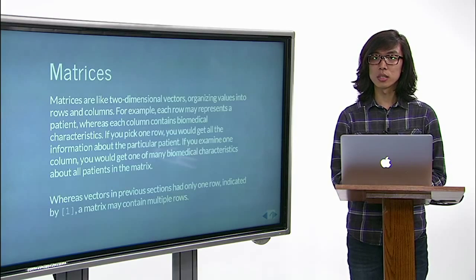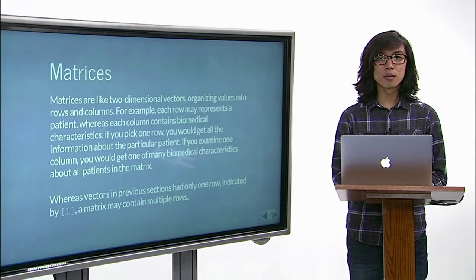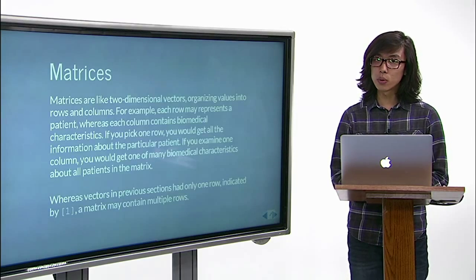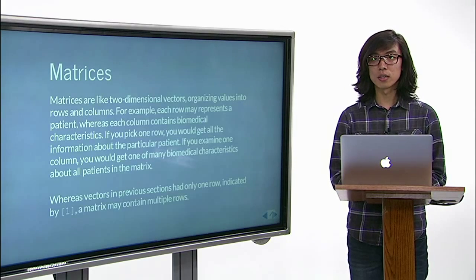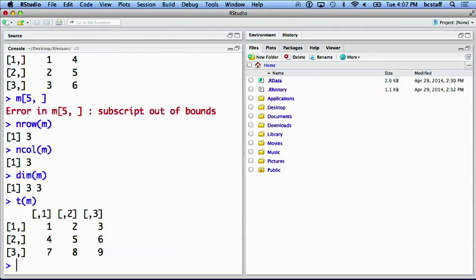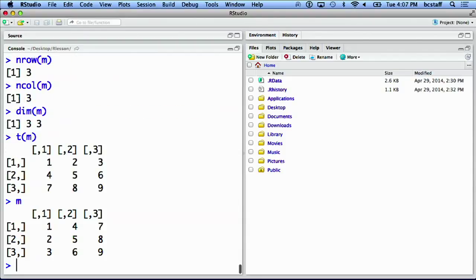Matrices being two-dimensional, we could flip the columns and the rows. Such operation is called transpose and used often in statistics. Simply use the t function to transpose a matrix, m here. Now, let's compare it to the original matrix m, and we see that the first row has become the first column in the transposed matrix.